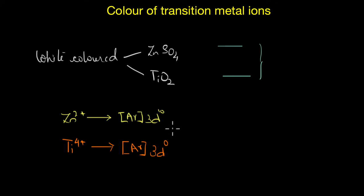So, in the case of zinc, there are no empty d orbitals available to promote the electrons, and in the case of titanium, there are no d electrons at all. So because of this, it is not possible to have a d-d transition in these compounds, and therefore, the complexes of these ions do not exhibit any color.